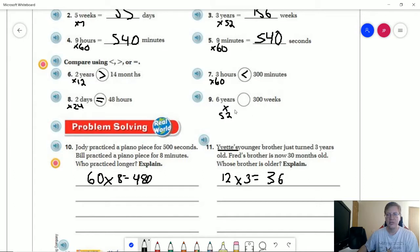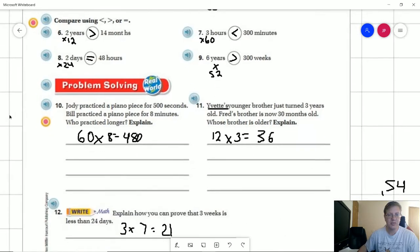For number nine, we can multiply six times 52. Now, one trick that I will tell you is that you don't even need to do that. You could just multiply by 50 to figure out that they would be equal. The fact that we're multiplying by a number larger than 50 means that we will have to go past 300. We would end up with 312 weeks on this side compared to 300. And that would be greater than.